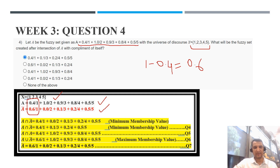Next, we calculate A intersection A complement. We take the minimum value for intersection. So: minimum of 0.4 and 0.6 is 0.4; minimum of 1 and 0 is 0; minimum of 0.9 and 0.1 is 0.1; minimum of 0.8 and 0.2 is 0.2; and minimum of 0.5 and 0.5 is 0.5. When an element has membership value 0, we can omit it from the final answer.